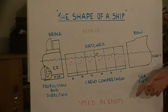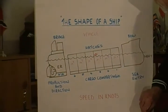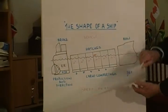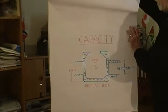The speed of the ship is measured in knots, which is sea miles per hour.